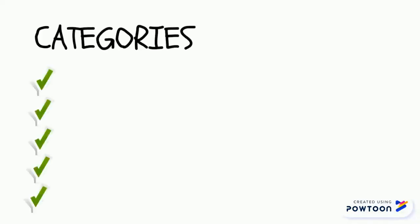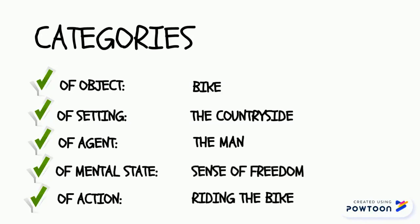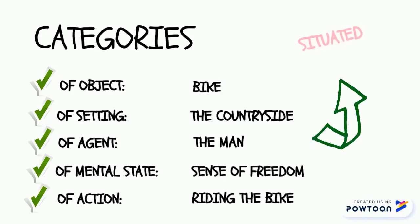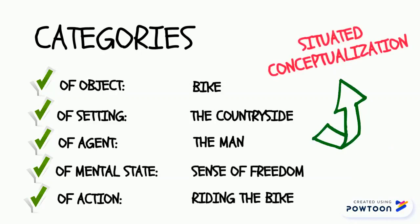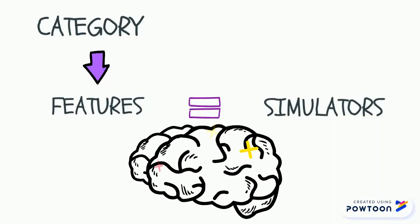Here we can observe five of what Barsalou calls categories: the category of objects, of setting, of agent, of mental state, and of action. All of these combined form what's called a situated conceptualization. Each of these categories is composed of different features.